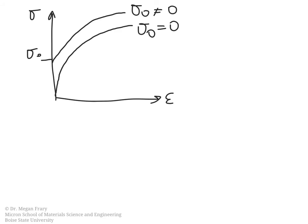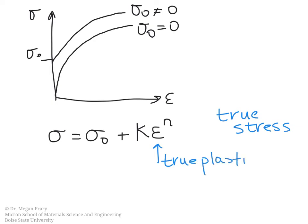But in either of these cases, we can describe this by the following equation. The stress is equal to sigma-naught plus k epsilon to the n. A few things to note. First of all, this is true stress in this equation. When we write it in this way, this is the true plastic strain. Sometimes the equation is written without the sigma-naught. And in this case, then this epsilon is the true total strain.